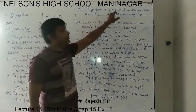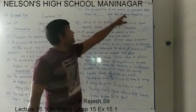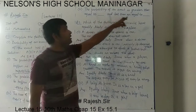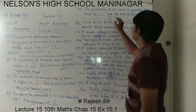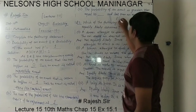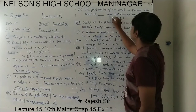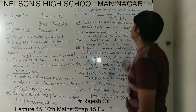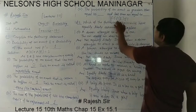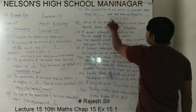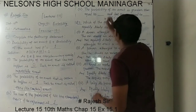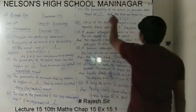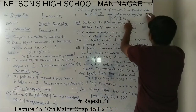The fifth number: the probability of an event is greater than or equal to and less than or equal to dash. For this, in the theory we have seen that for the probability of any event P(E), 0 ≤ P(E) ≤ 1. This means the probability of any event will be greater than or equal to 0 and less than or equal to 1.